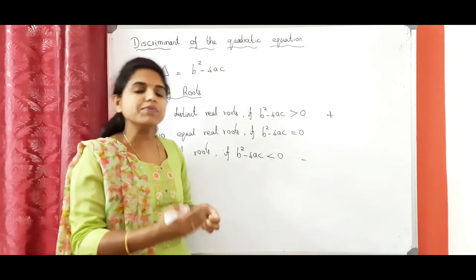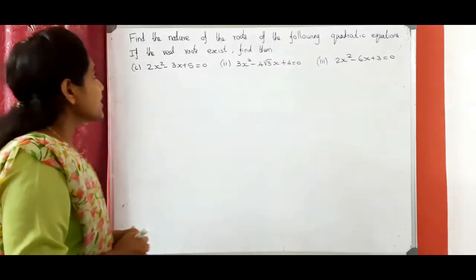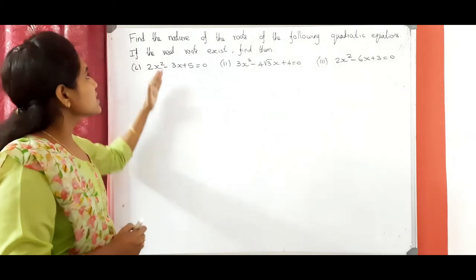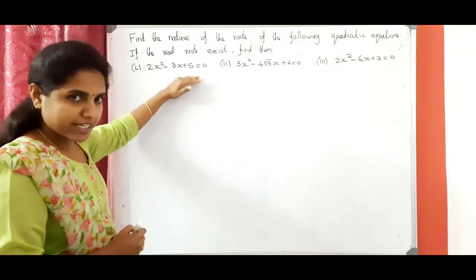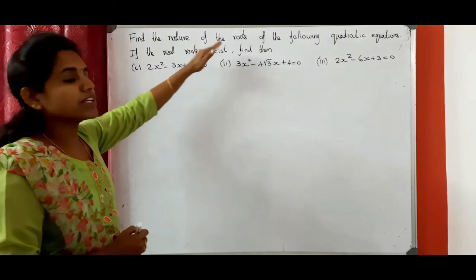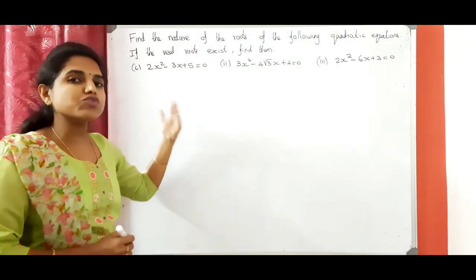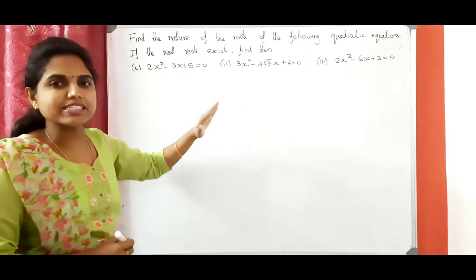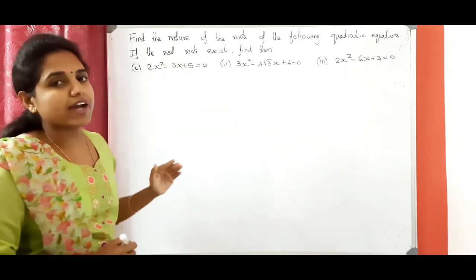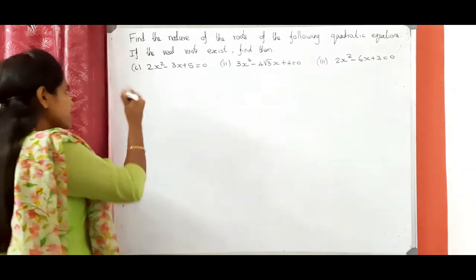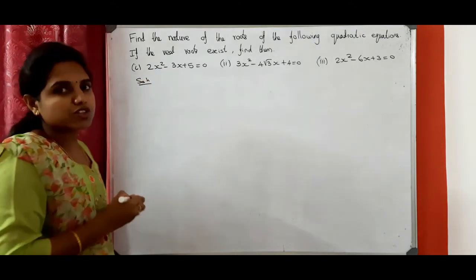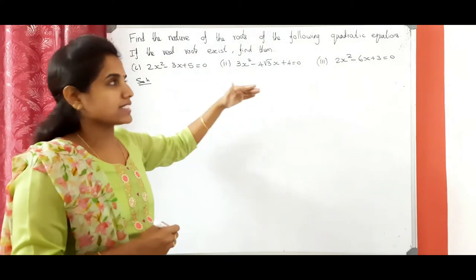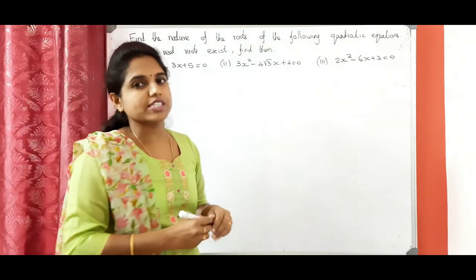Using this, let's see how we can solve problems. Find the nature of the roots of the following quadratic equation. If real roots exist, find them. We need to find the nature of the roots, and if real roots exist — meaning b squared minus 4ac is positive or equal to 0 — we will find them. For that, first we need to find the discriminant delta equals b squared minus 4ac, then check if real roots exist.